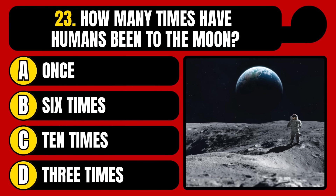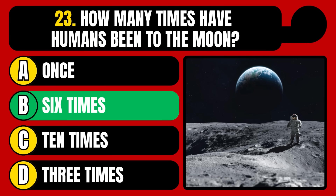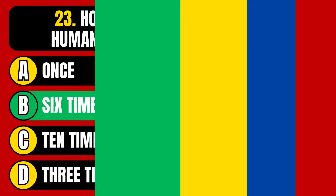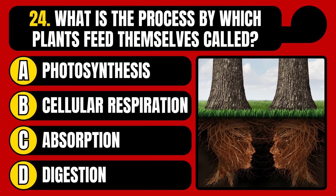How many times have humans been to the moon? Once, six times, ten times, or three times? The correct answer is option B, six times.